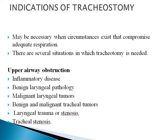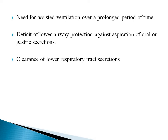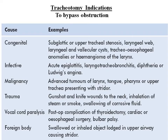The indications for tracheostomy are when circumstances compromise adequate respiration. These include upper airway obstruction from inflammatory disease, benign laryngeal pathology, malignant laryngeal tumors, benign and malignant tracheal tumors, laryngeal trauma, stenosis, and tracheal stenosis. Need for assisted ventilation over a prolonged period, deficit of lower airway protection against aspiration, and clearance of lower respiratory tract secretions are also indications. Causes of obstruction include congenital conditions, infection, malignancy, trauma, vocal cord palsy, and foreign body.